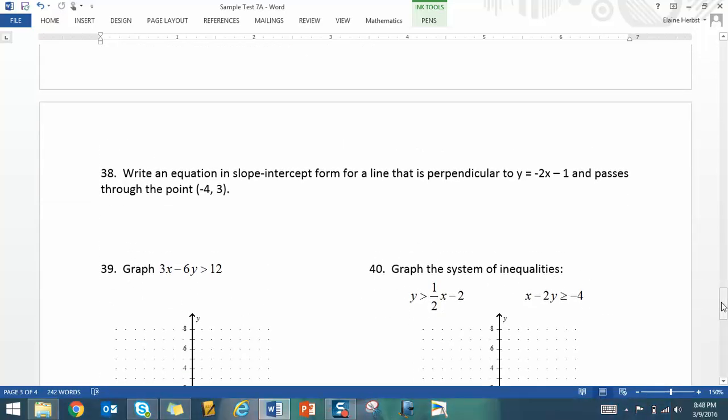Equation in point-slope form, or excuse me, in slope-intercept form. Remember it's perpendicular, so our slope is going to be the negative reciprocal. It's going to be a positive 1 half. So when you plug in the point and the slope into point-slope form and then rearrange to slope-intercept form, you get y equals 1 half x plus 5.